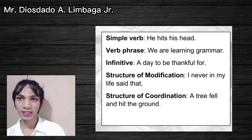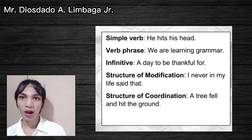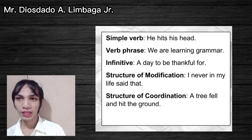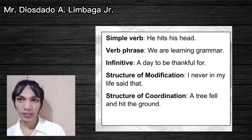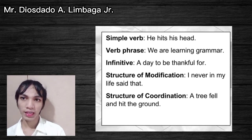Verbal elements can be in the form of a simple verb — for example, 'He hits his head': 'hits' is the simple verb and 'his head' is the complement. Or a verb phrase: 'We are learning grammar' — 'are learning' is the verb phrase and 'grammar' is the complement. Or an infinitive: 'A day to be thankful for' — 'to be' is the infinitive and 'thankful for' is the complement. Or a structure of modification: 'I never in my life said that' — 'never in my life' is the modifier and 'said that' is the complement. Or a structure of coordination: 'A tree hit and fell to the ground' — 'hit and fell' is the structure of coordination and 'the ground' is the complement.